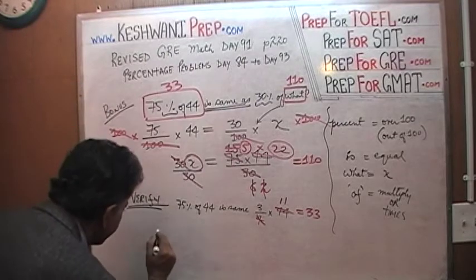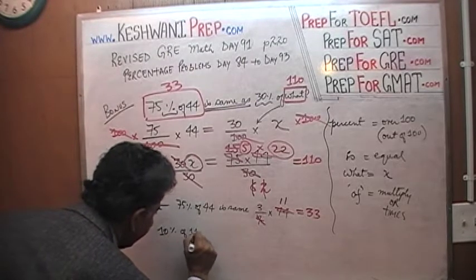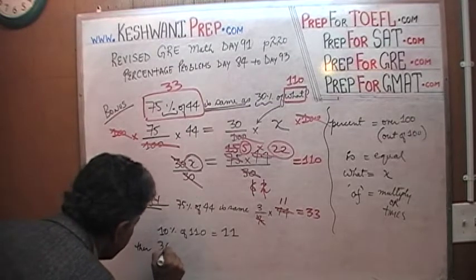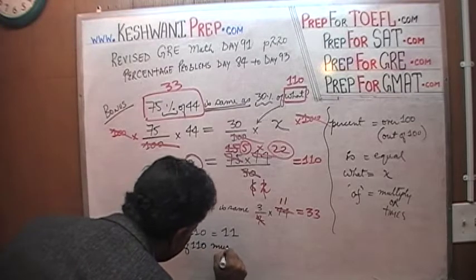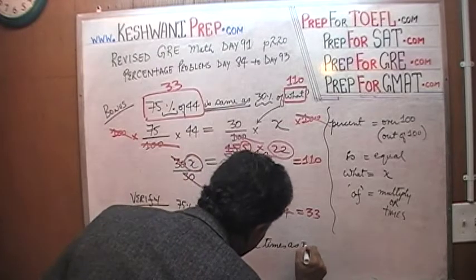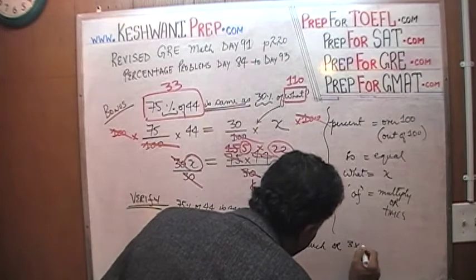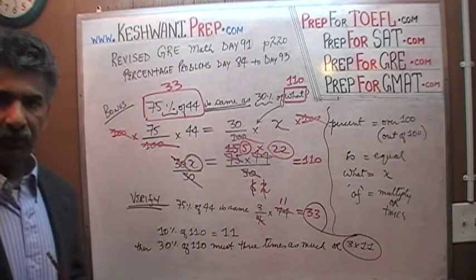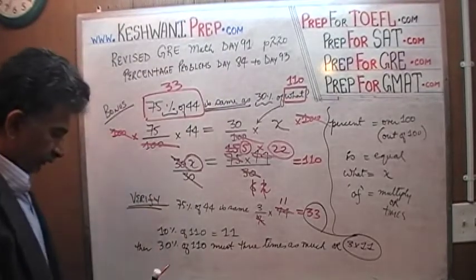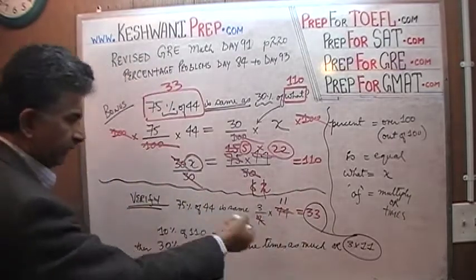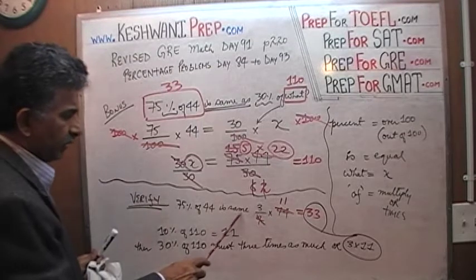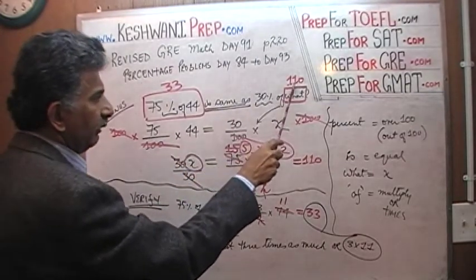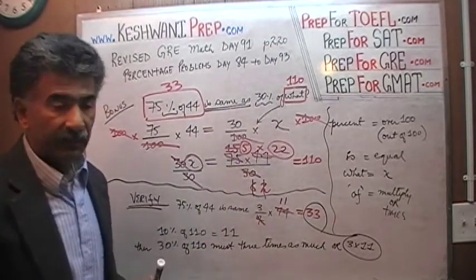Let's find out what 30% of 110 is. We know that 10% of 110 is 11. Therefore 30% of 110 must be 3 times as much, so 3 times 11, which is 33. So it does work out — it does make sense. We verified that 75% of 44 equals 30% of 110, both equal 33.